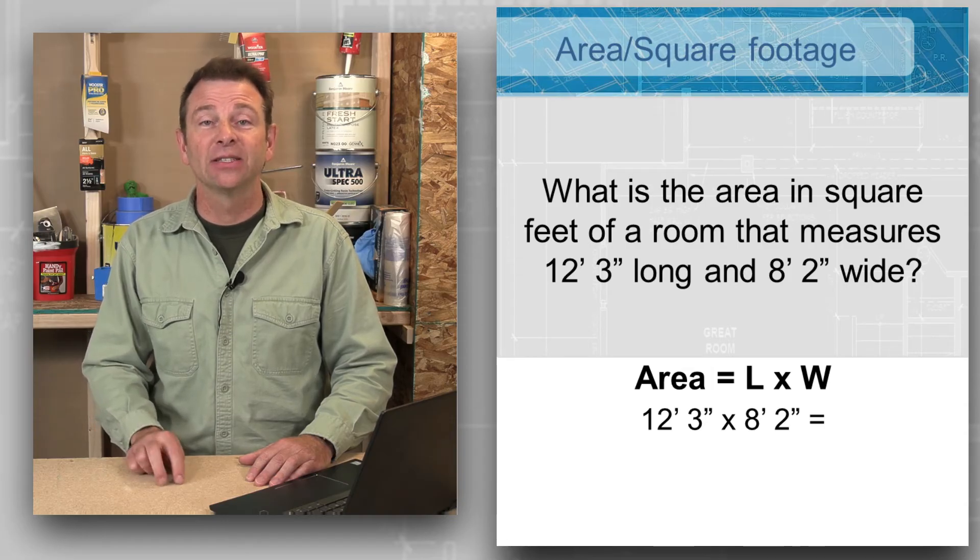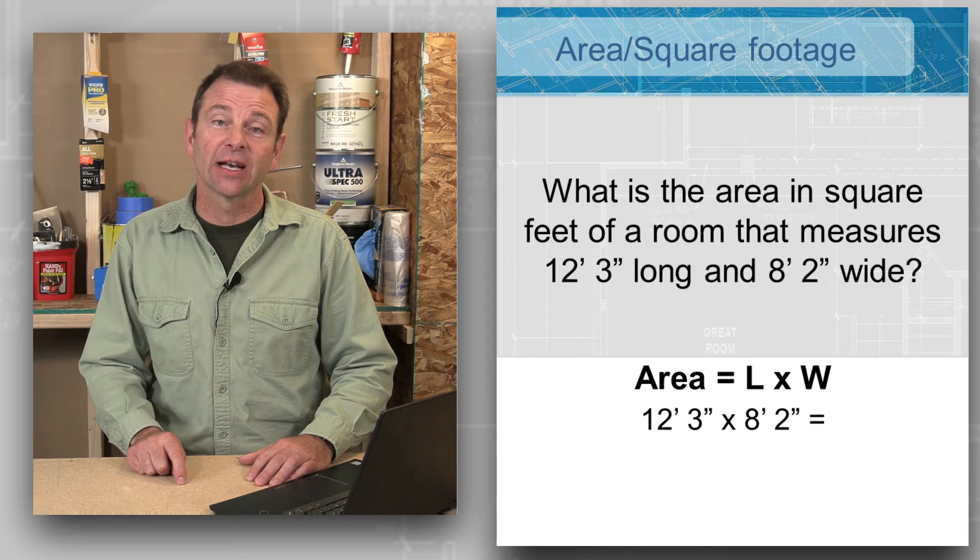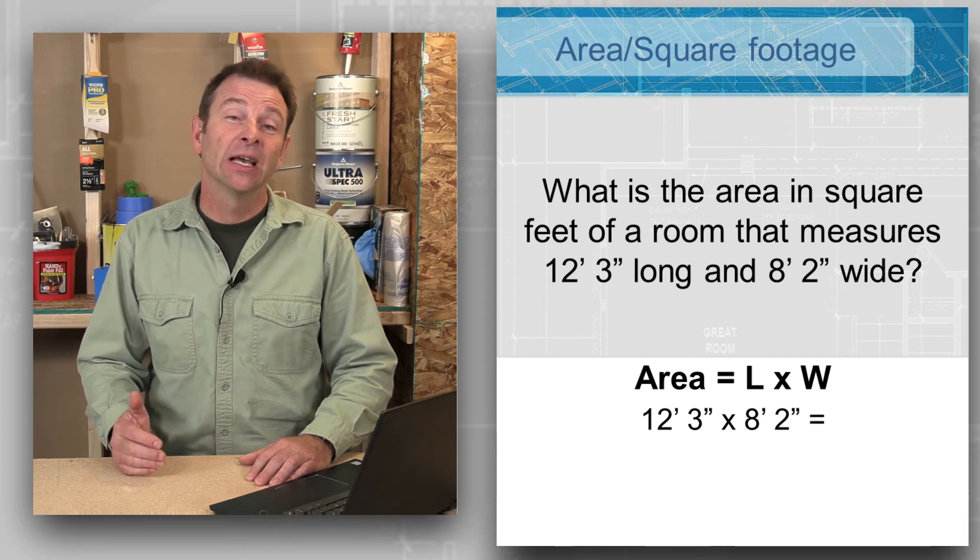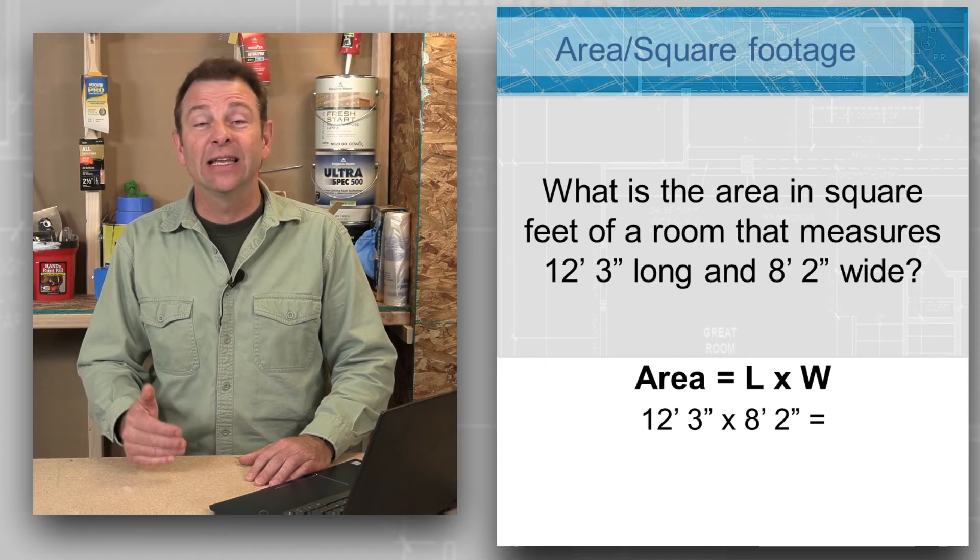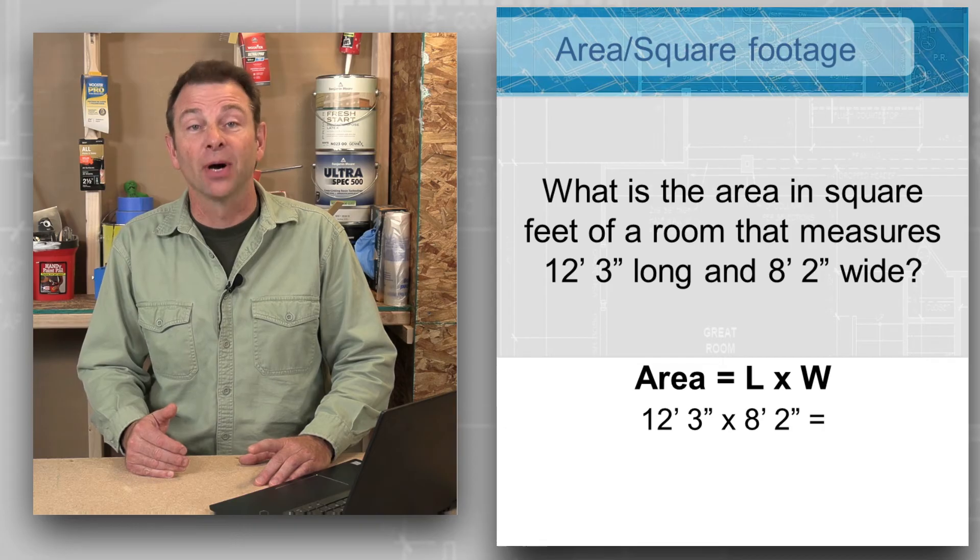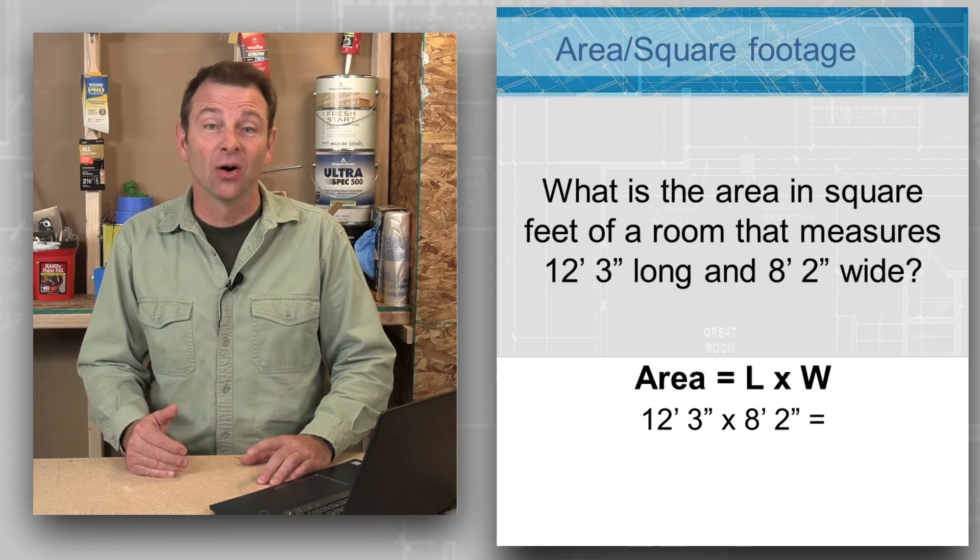We're going to multiply these two measurements together. If we had a construction calculator, we can just punch in the numbers and it will come up with a solution. If you don't have a calculator, the easiest way, or one way that is easy to solve this, would be to convert both measurements into inches only.